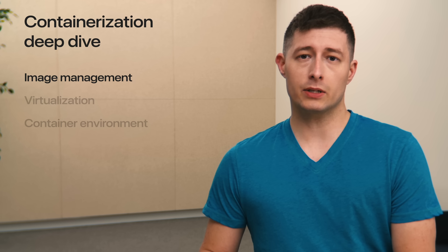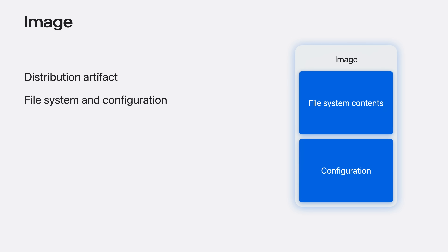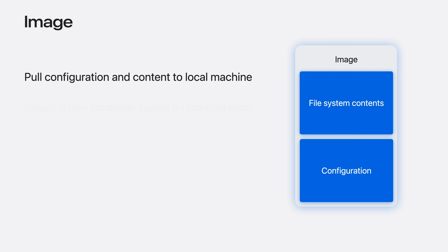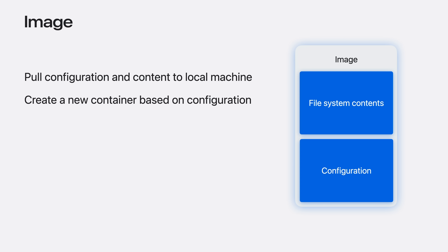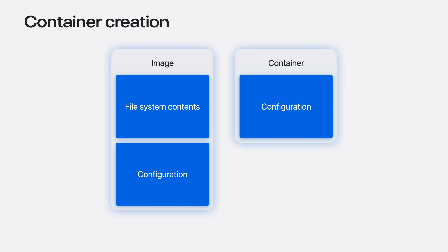First, let's look at how containerization handles image management. Most containers are created from an image. An image is a distribution artifact that contains file system contents and a default configuration. Images act as a template when creating a new container. Containerization provides APIs to fetch the image's file system contents and configuration. This operation consists of requests to a registry — a service that handles the storage and distribution of images — and then writing the registry's response to the local file system for use.